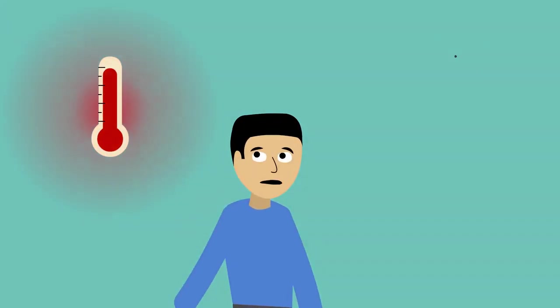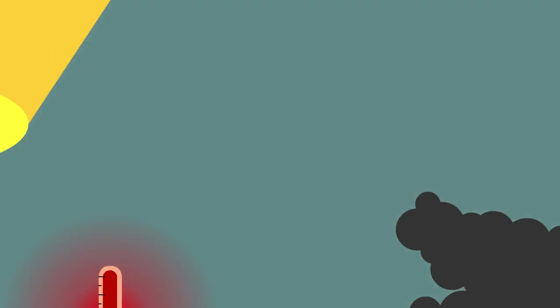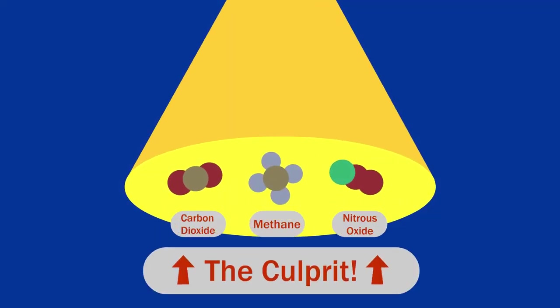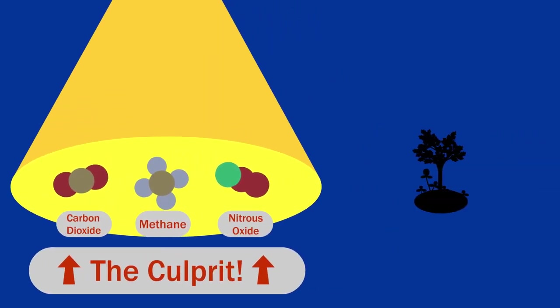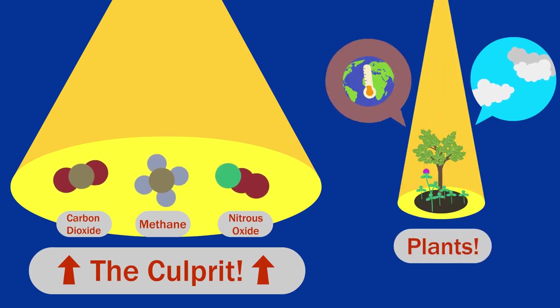In a time of rising temperatures and climate instability, most of the attention goes to greenhouse gases. But there is another way, often overlooked, to stabilize the climate and cool the planet. Plants.